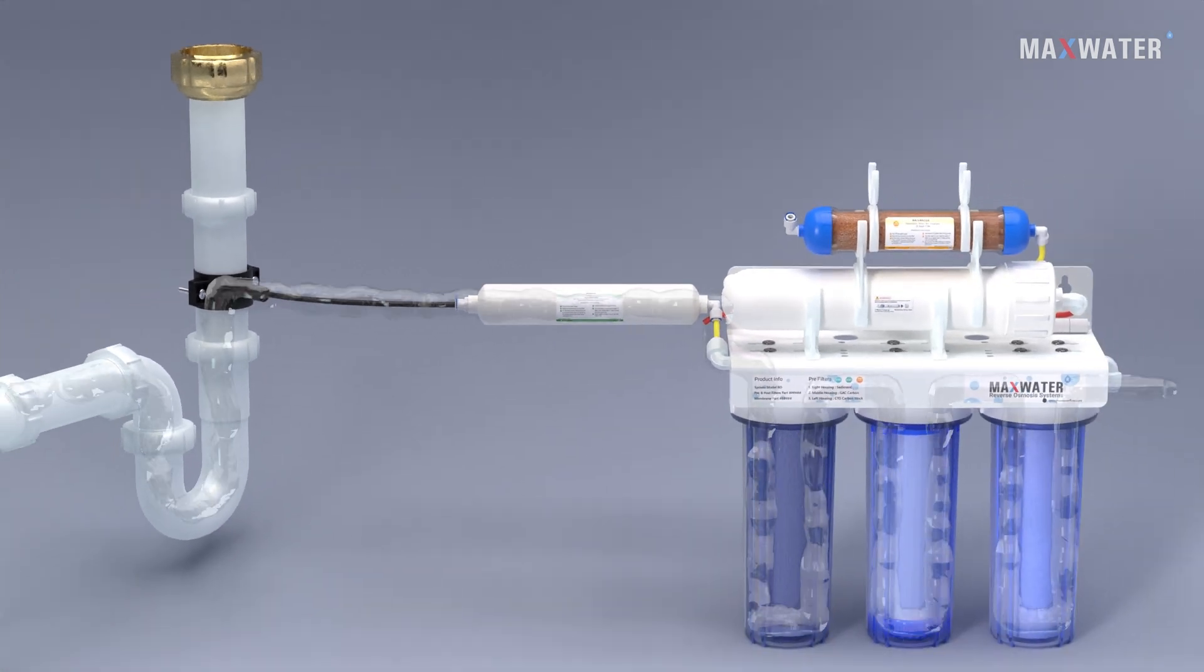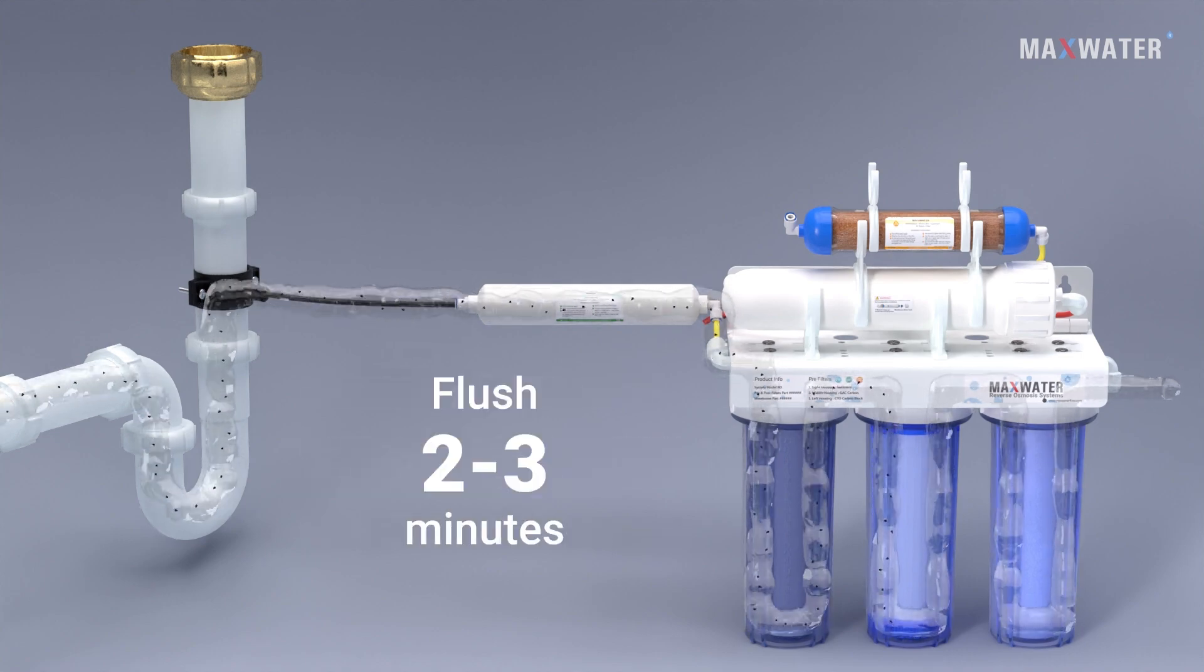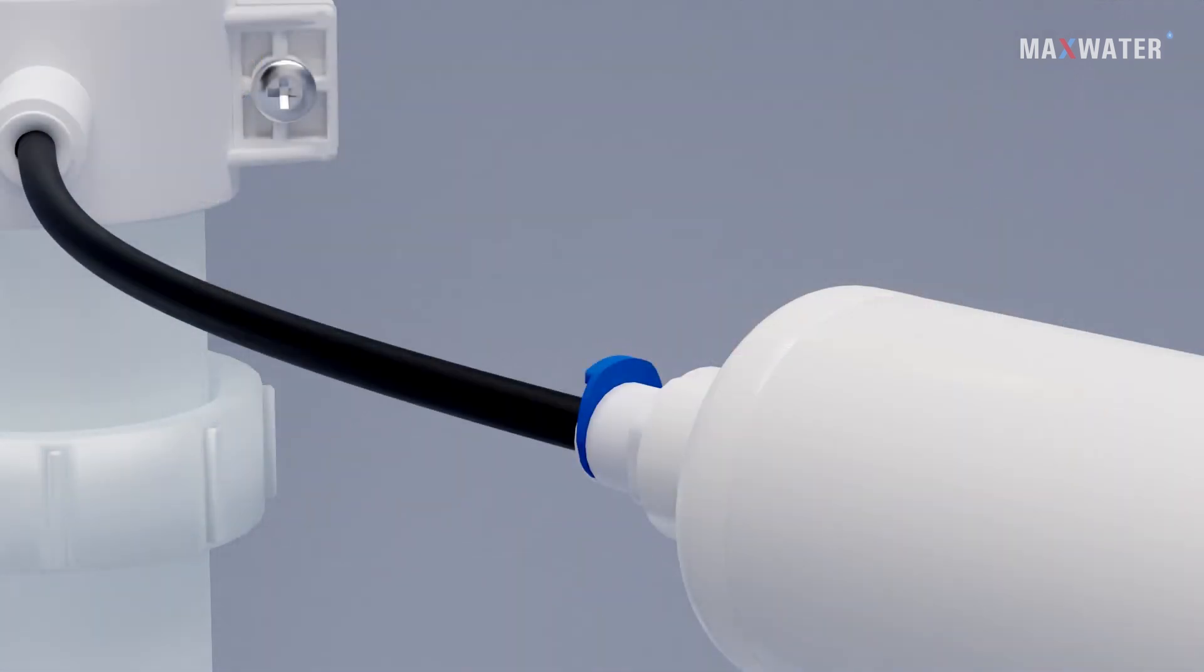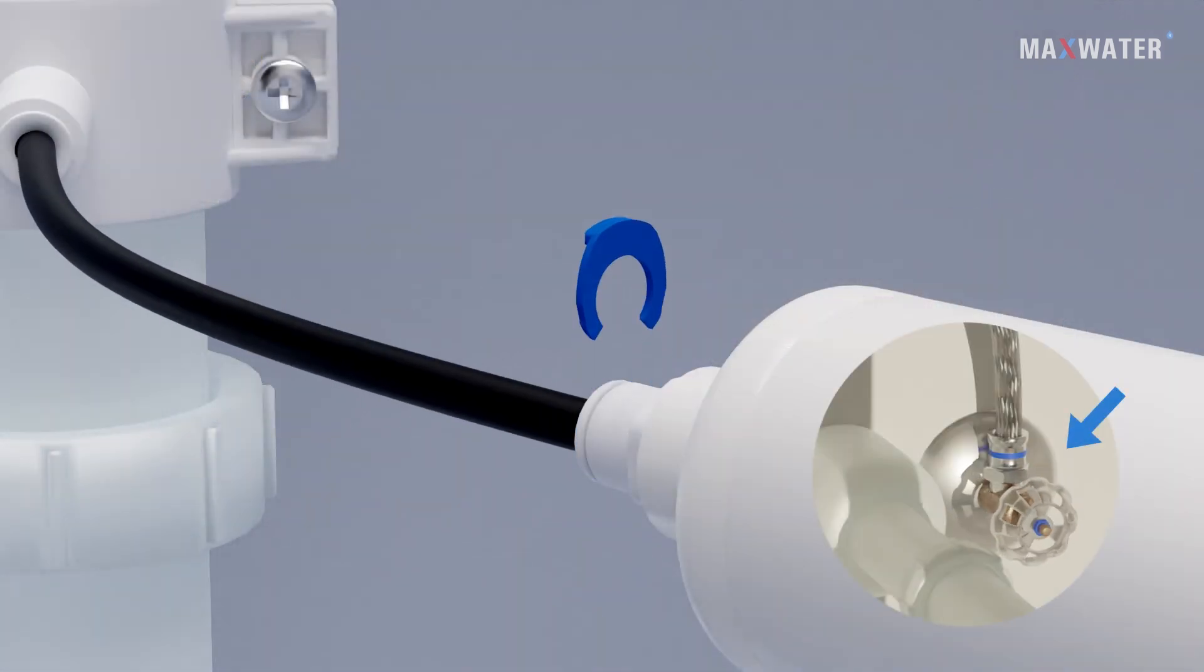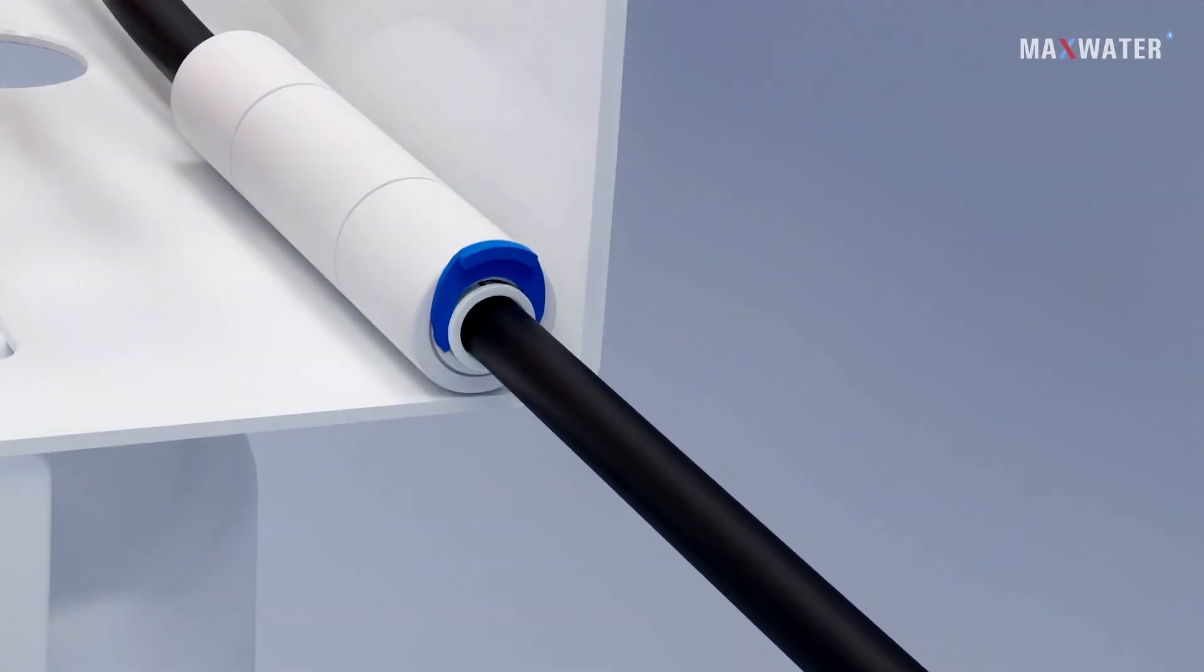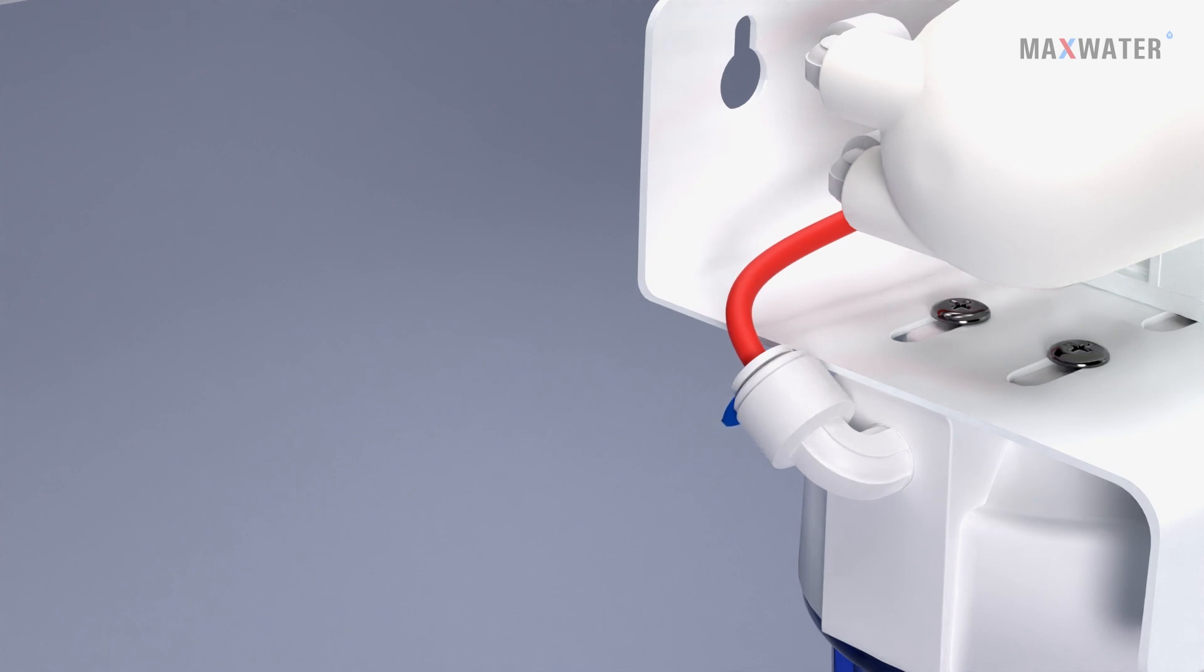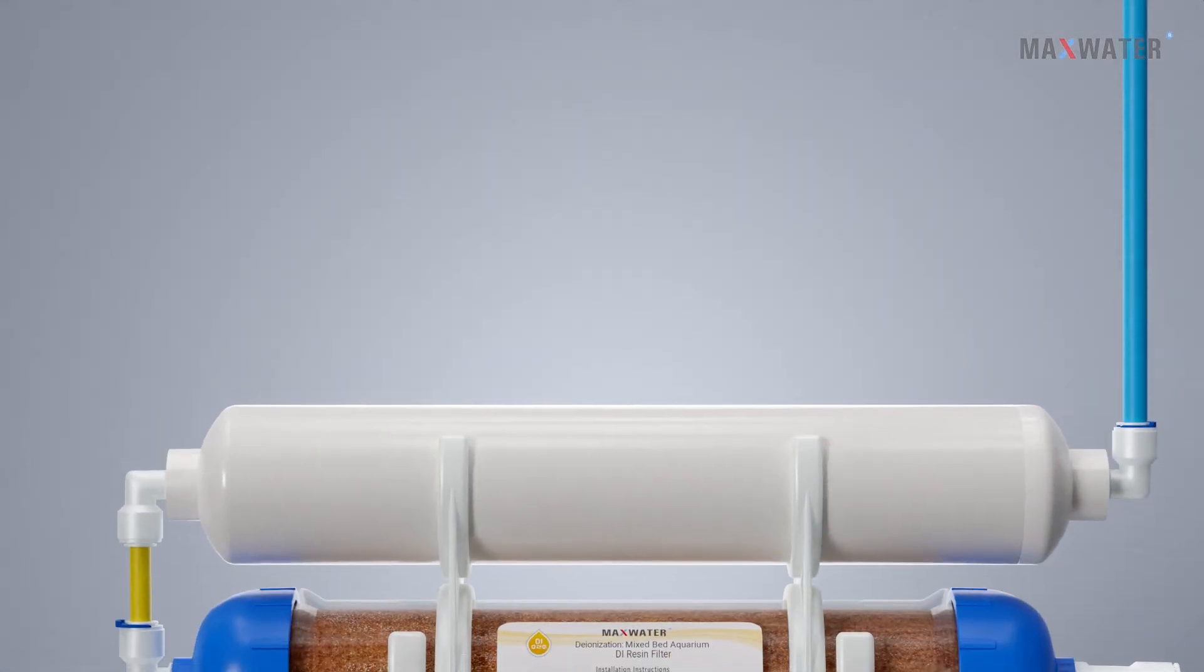Turn on the water supply and flush the filters for two to three minutes until all the carbon fines flush out. Turn off the water supply, take out the black tube and connect it to the flow restrictor outlet, and take out the post carbon. Place it back to its location and connect the tube to the DI filter outlet.